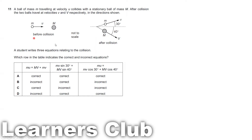A student writes three equations relating to the collision. Which row in the table indicates the correct and incorrect inequalities? The mass is moving horizontally before the collision, but after the collision it is not moving horizontally — there is an angle from which they are moving. So you have to consider the components in the horizontal direction as well as the vertical direction.